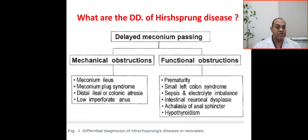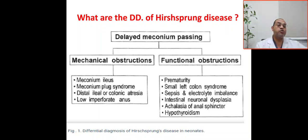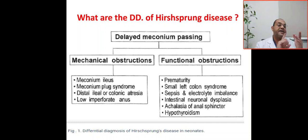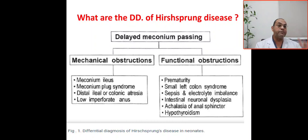Other functional causes include intestinal neuronal dysplasia, achalasia of the anal sphincter, and hypothyroidism. To summarize functional obstruction with the 3H mnemonic: the first H is hypoplastic left colon syndrome (small left colon syndrome), associated with infant of diabetic mother and microcolon. The second H is hypokalemia causing paralytic ileus and septic ileus. The third H is hypothyroidism, along with intestinal neuronal dysplasia and achalasia of the anal sphincter.